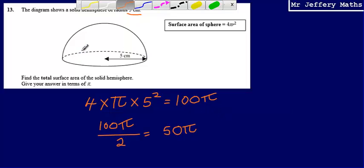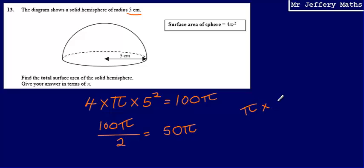So in order to do that, we're going to use the basic πr² to work out the area of that circle. So we're going to do π × 5², which gives us 25π.